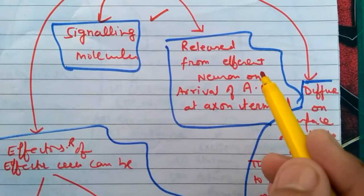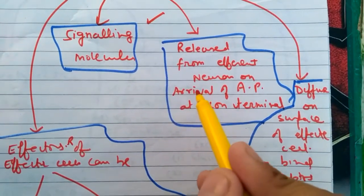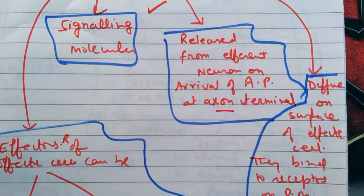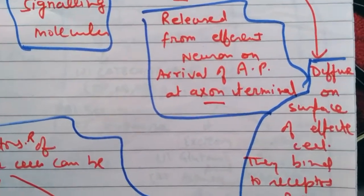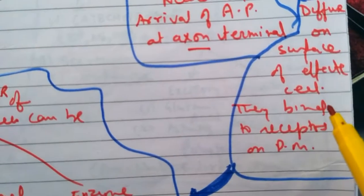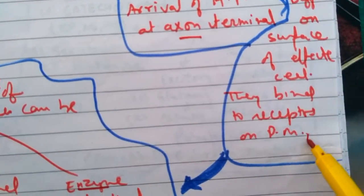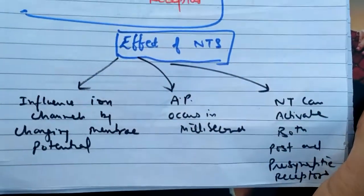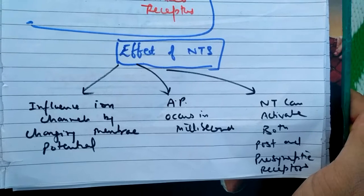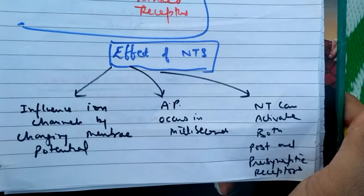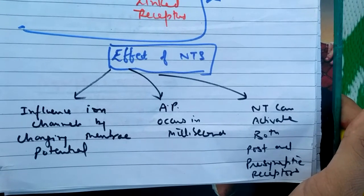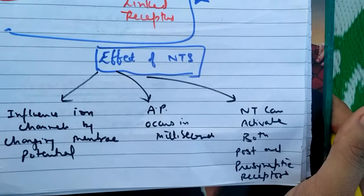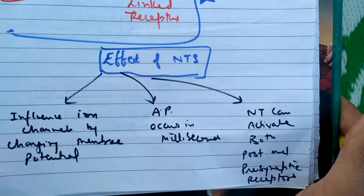Neurotransmitters are released from the efferent neuron on arrival of the action potential at the axon terminal. The action potential is the stimulus for the release of the neurotransmitter. They diffuse on the surface of the effector cell and bind to receptors on the plasma membrane. They influence ion channels by changing the membrane potential.